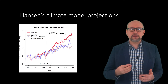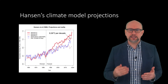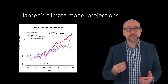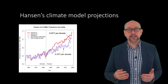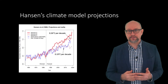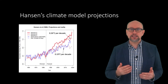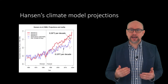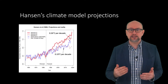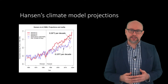Scenario B has a 0.26 degrees Celsius per decade temperature trend, whereas the observed GISTEMP temperature trend has been 0.19 degrees Celsius. This is close, but Scenario B has clearly overestimated the observed temperature trend in the forecast period. Why the discrepancy?